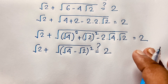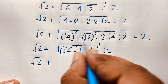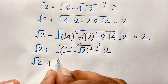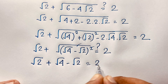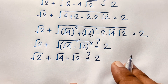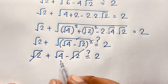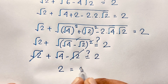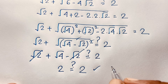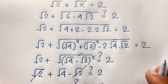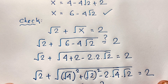So at this point, square root 2 plus the outer square root cancels, giving square root 4 minus square root 2 equals 2. Then square root 2 cancels out, and square root 4 gives 2, so 2 equals 2. Left hand side and right hand side are both equal. So x equals 6 minus 4 square root 2. This is our final answer.